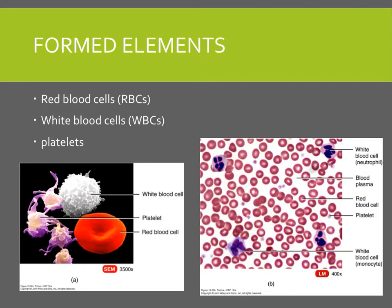Formed elements consist of red blood cells, white blood cells, and platelets. In the picture on the right, you'll notice that red blood cells make up the majority of the formed elements — about 99% of the formed elements are red blood cells. White blood cells look very different from one another. And the small little areas — those cell fragments — are the platelets.